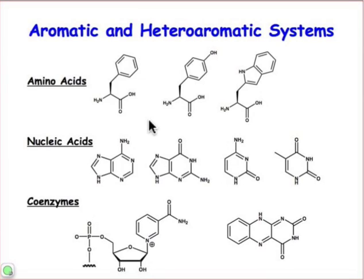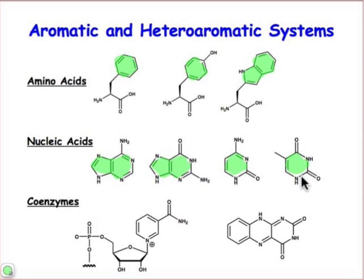From this slide, you can see that cyclical pi systems, which are aromatics, or if they contain nitrogen, oxygen, or sulfur — as in the case of tryptophan — they're called heteroaromatics. Aromatics and heteroaromatics are very common in the building blocks of biological systems. The amino acids and the nucleobases, which are an important component in DNA and RNA building blocks, are all heteroaromatics. Enzymes also recruit cofactors from vitamins, such as nicotinamide or flavin, which are also heteroaromatics. So we need to learn a little bit more about the chemistry of these cyclical pi systems.